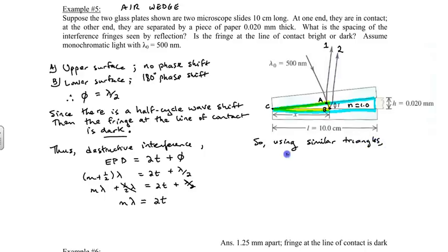Using similar triangles, we write t over x equals h over l, which is the length of the slide, given as 10 centimeters. If we rearrange this equation, we can substitute t where t equals m lambda over 2.